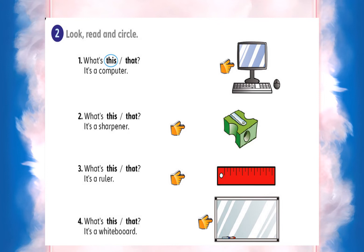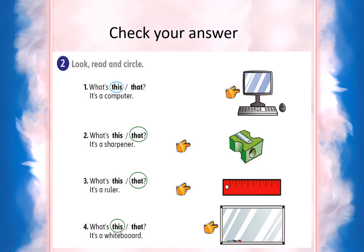Now let's do practice — we say 'what is this' or 'what is that.' Number one — the answer is 'this' because it is near. Number two: what is this or that? It's a shop — the answer is 'that' because it is far. Number three: what is this or that? It's a ruler — the answer is 'that.' Number four: what is this or that? It's a whiteboard — the answer is 'this' because it is near.